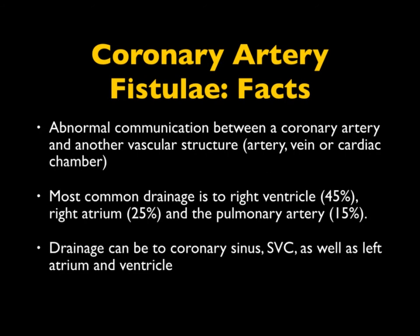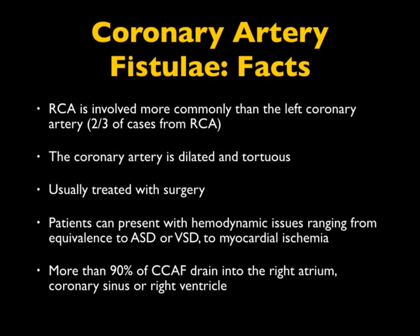Coronary artery fistula is something you need to know. It's an abnormal communication between the coronary and another vascular structure — be it artery, vein, or chamber. Its most common drainage is to the right ventricle, right atrium, and then pulmonary artery, but it can drain almost anywhere. The right coronary is involved in about two-thirds of cases. The coronary is usually dilated and tortuous. Surgery is typically the treatment of choice. Patient presentations can range from shortness of breath to hemodynamic issues similar to ASD or VSD, to ischemia. About 90% of coronary artery fistulas drain into the right atrium, coronary sinus, or right ventricle.